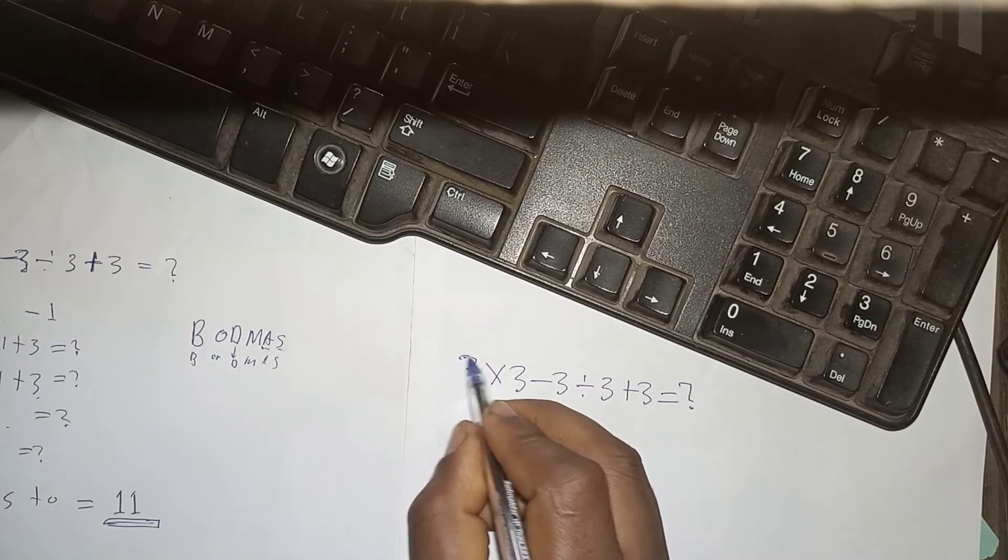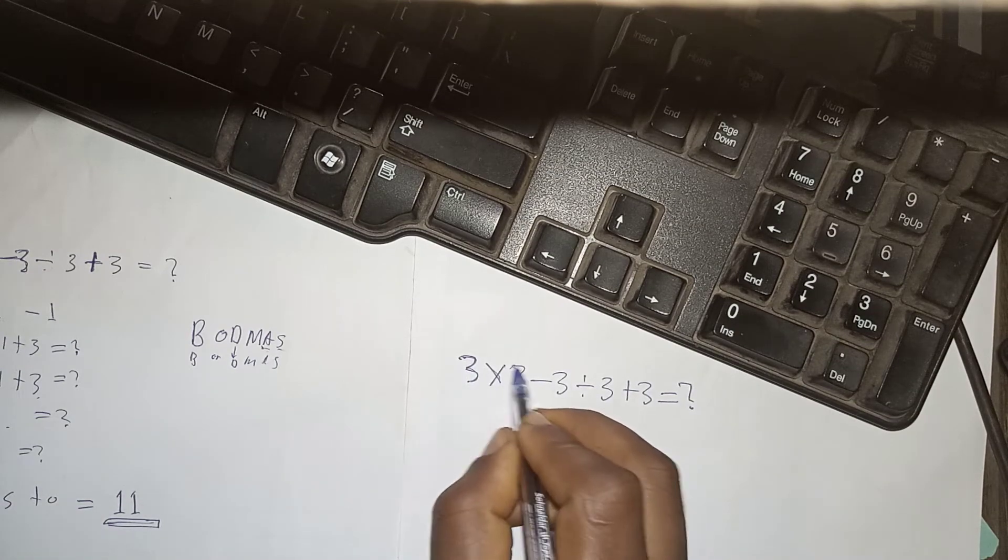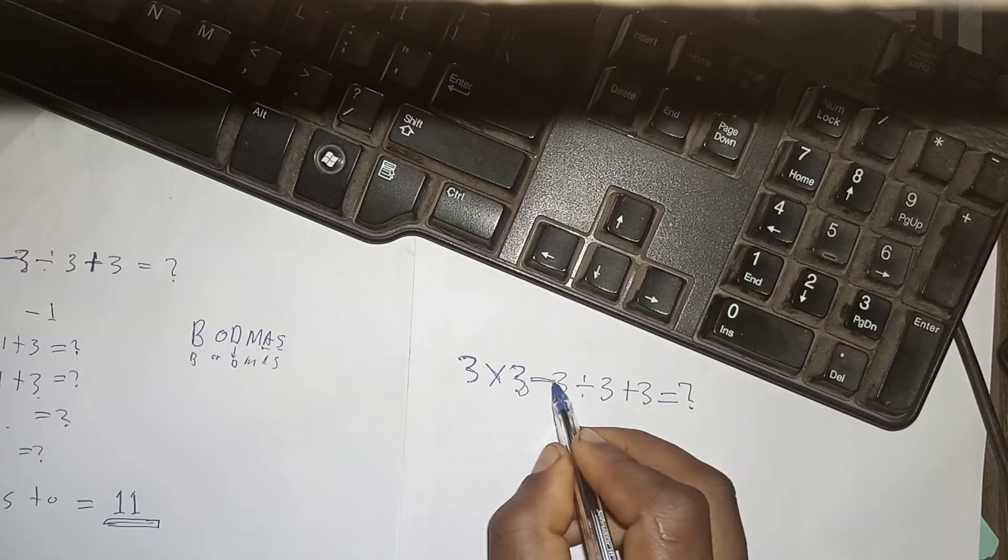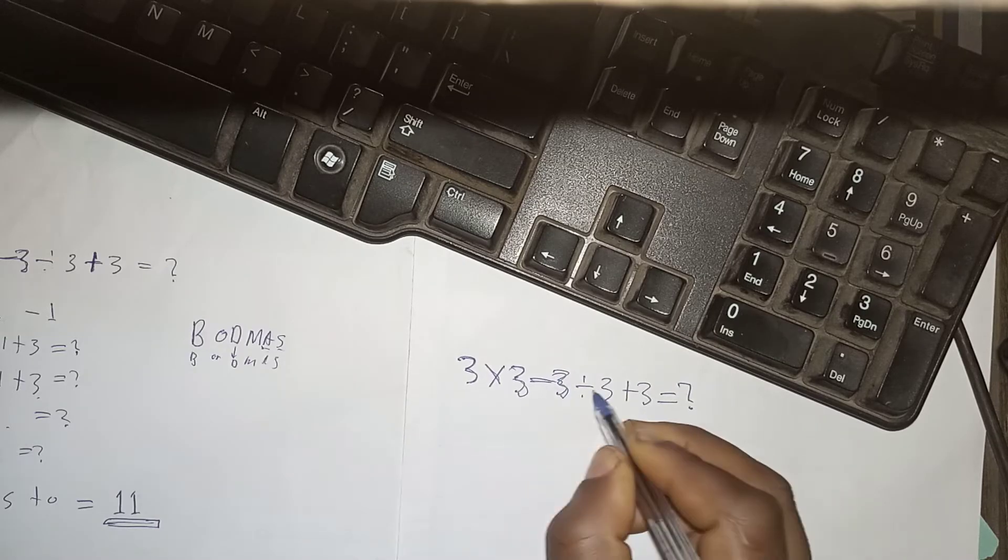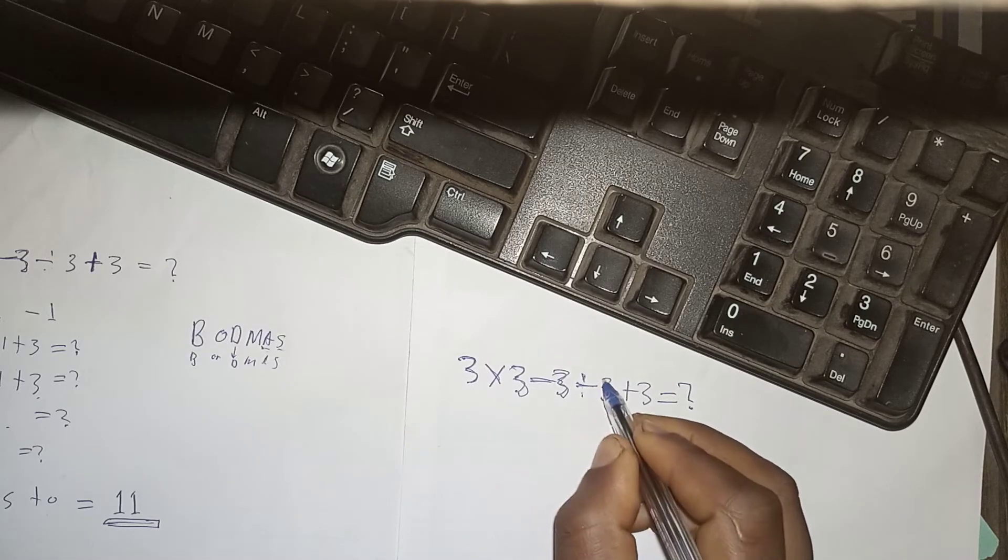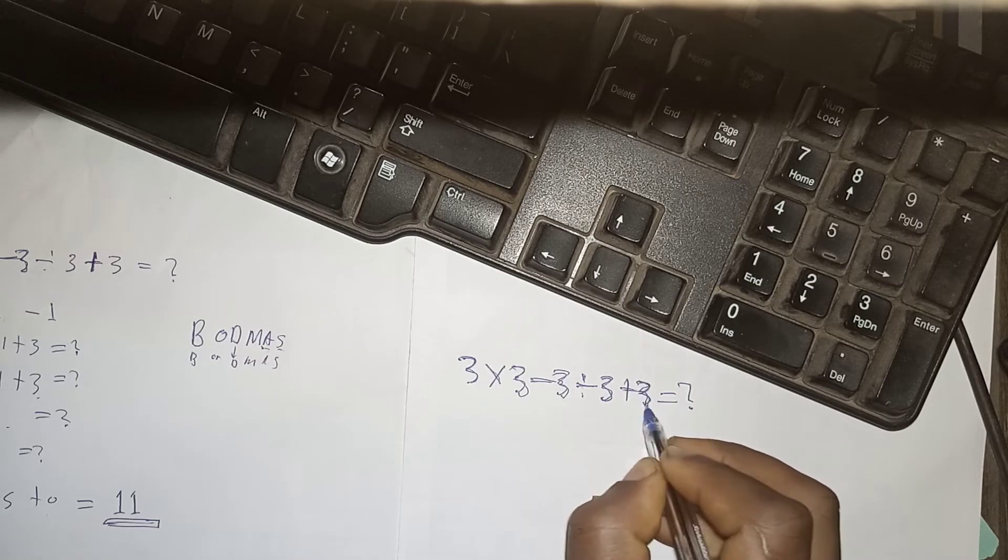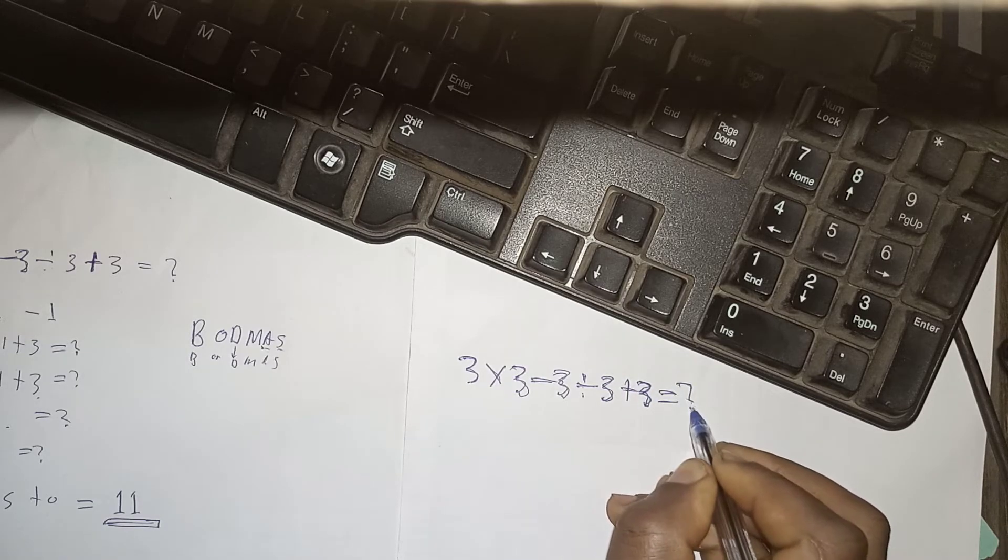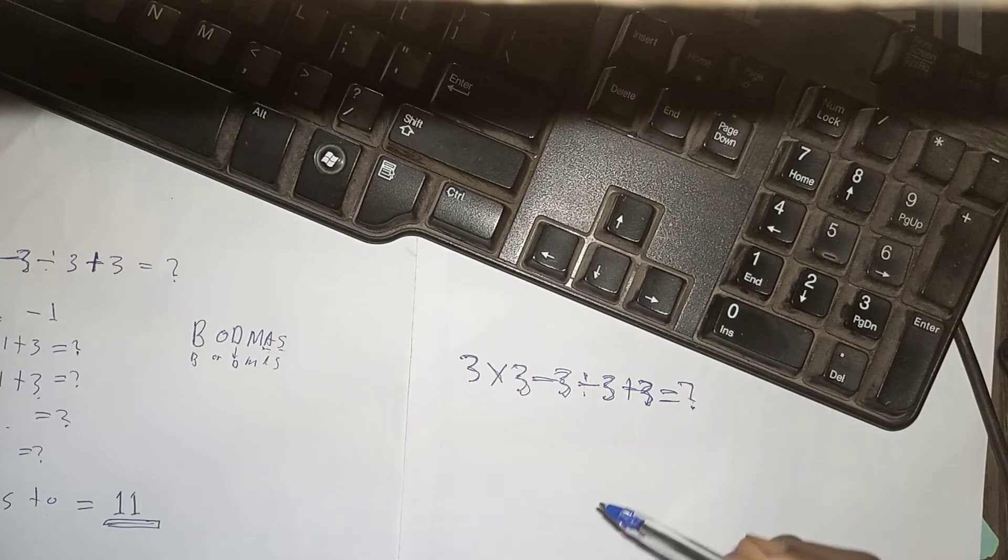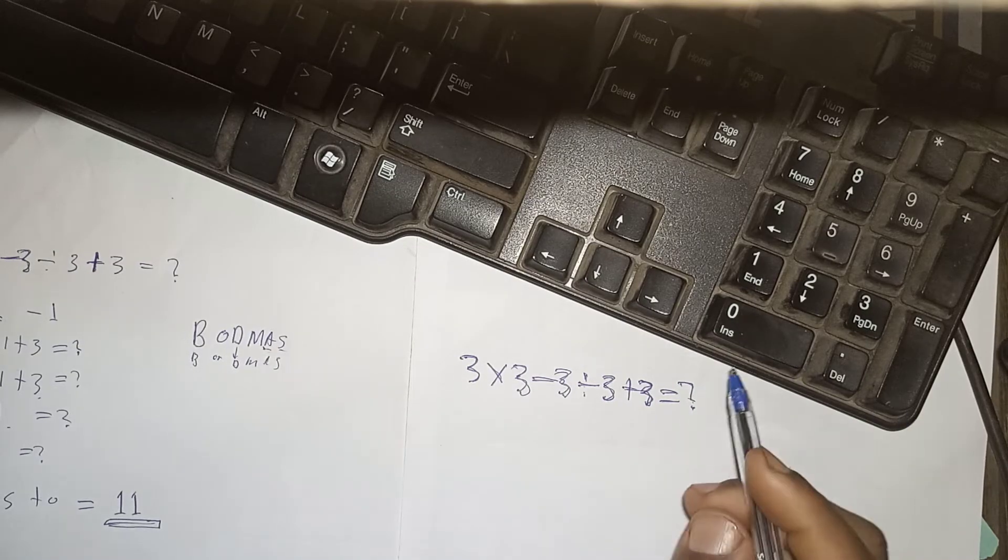Today, I will solve this 3 times 3 minus 3 divided by 3 plus 3 is equal math question and give you the correct answer.